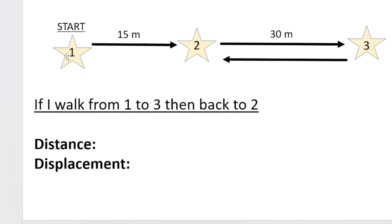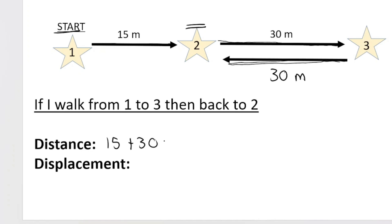Now, what happens if I walk from one all the way to three, then back to two, and stop at two? What is my distance and what is my displacement? Going from one to three then back to two: your distance is 15 plus 30, and then remember you're going back to two — from three back to two is another 30 meters. So your distance is 15 plus 30 plus 30, which is 75 meters. Remember, distance doesn't need a direction. Let's look at displacement.